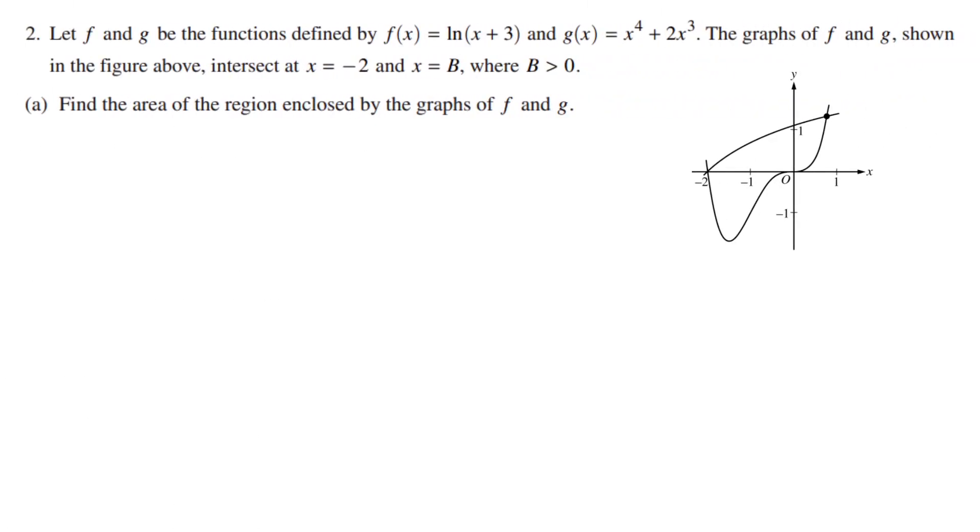Question 2 says that let f and g be the functions defined by f(x) equals ln(x+3) and g(x) equals x^4 + 2x^3. The graphs of f and g shown in the figure above intersect at x equals -2 and x equals b where b is greater than 0.